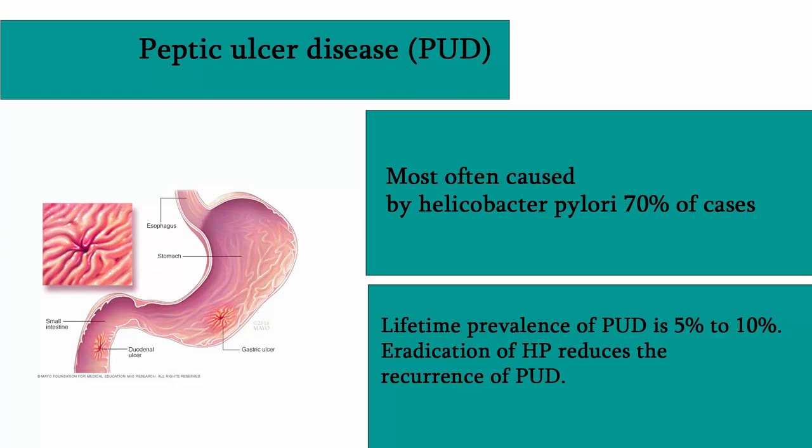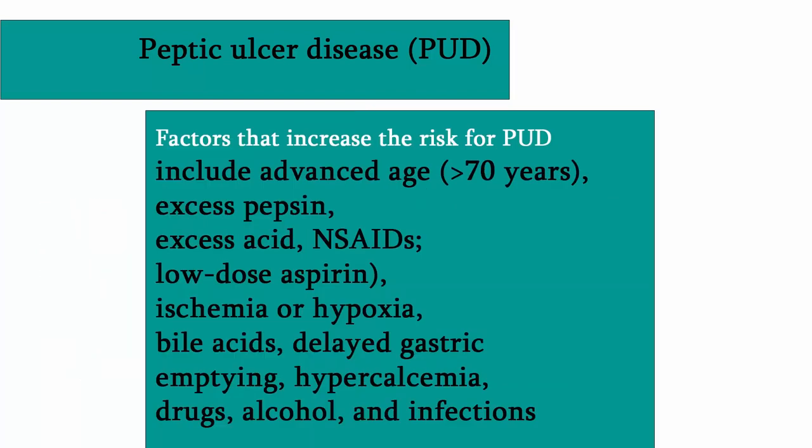Peptic ulcer disease is most commonly caused by Helicobacter pylori, in 70% of cases. Lifetime prevalence of peptic ulcer disease is 5–10%. Eradication of Helicobacter pylori reduces recurrence of peptic ulcer disease.